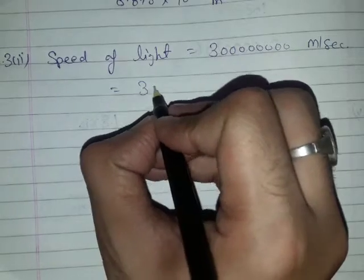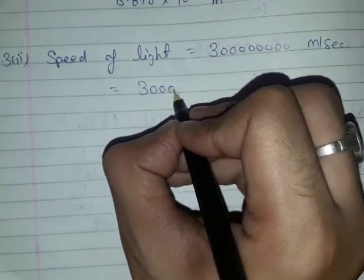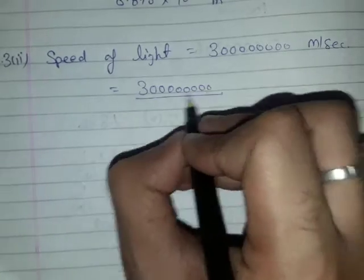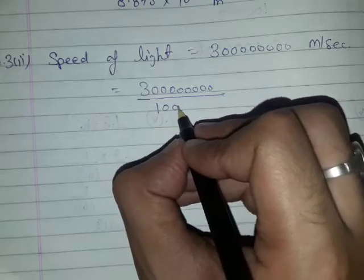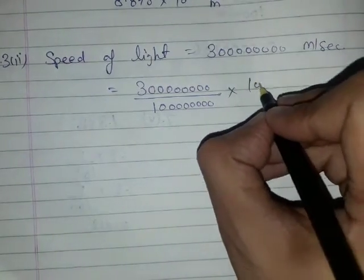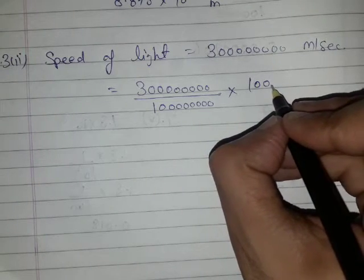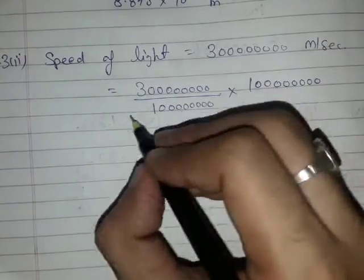So we have to divide the given number by one followed by eight zeros - one, two, three, four, five, six, seven, eight - and also we have to multiply this given number by one and eight times zero to express it in standard form.